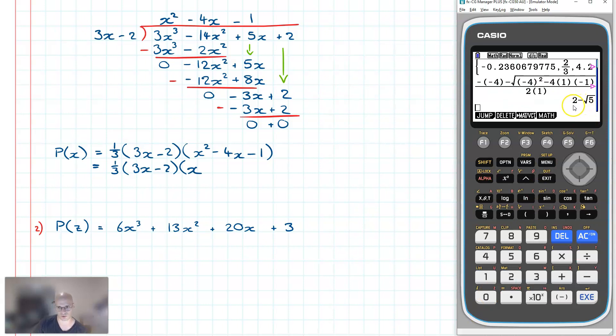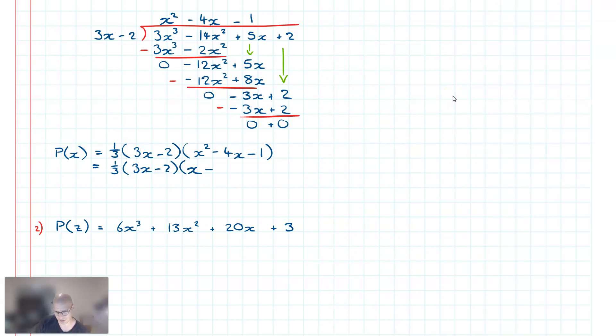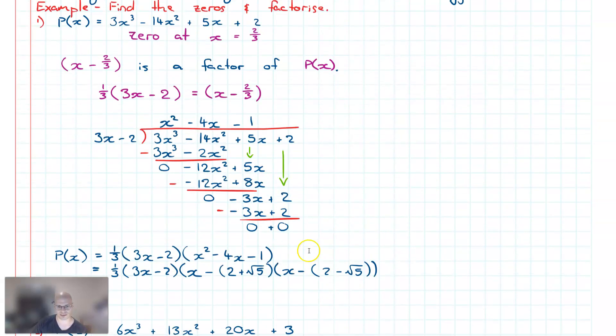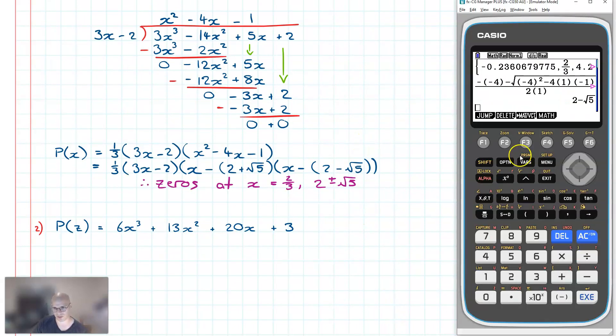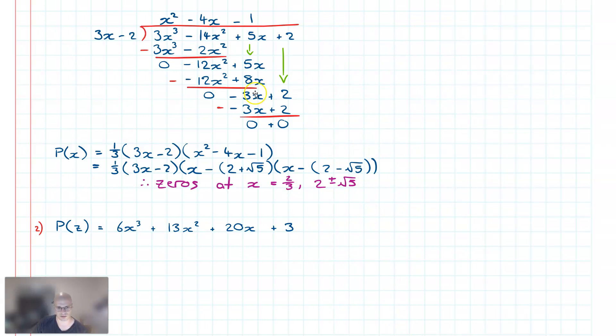And subsequently, the second root is obviously going to be 2 - √5. So throwing this down, we have (x - (2 + √5)) and (x - (2 - √5)). So there's a factorized form here, and we have zeros at 2/3, 2 + √5, and 2 - √5.